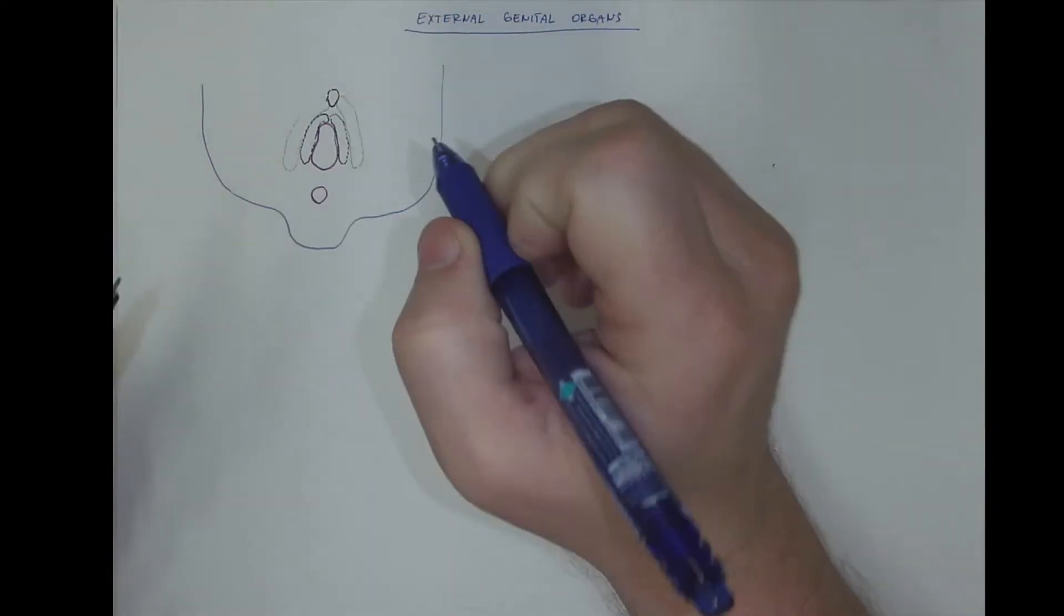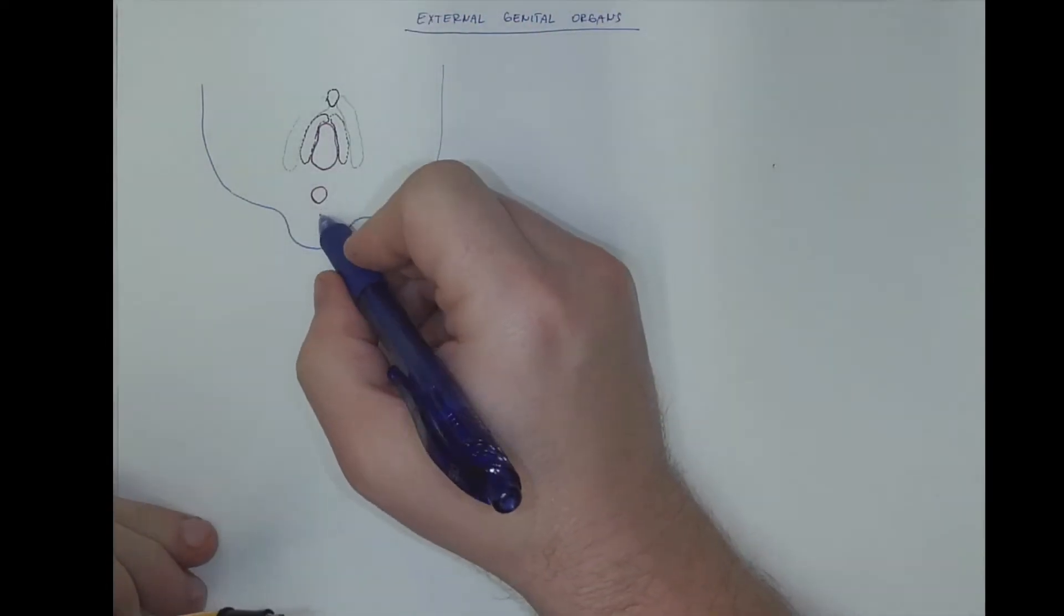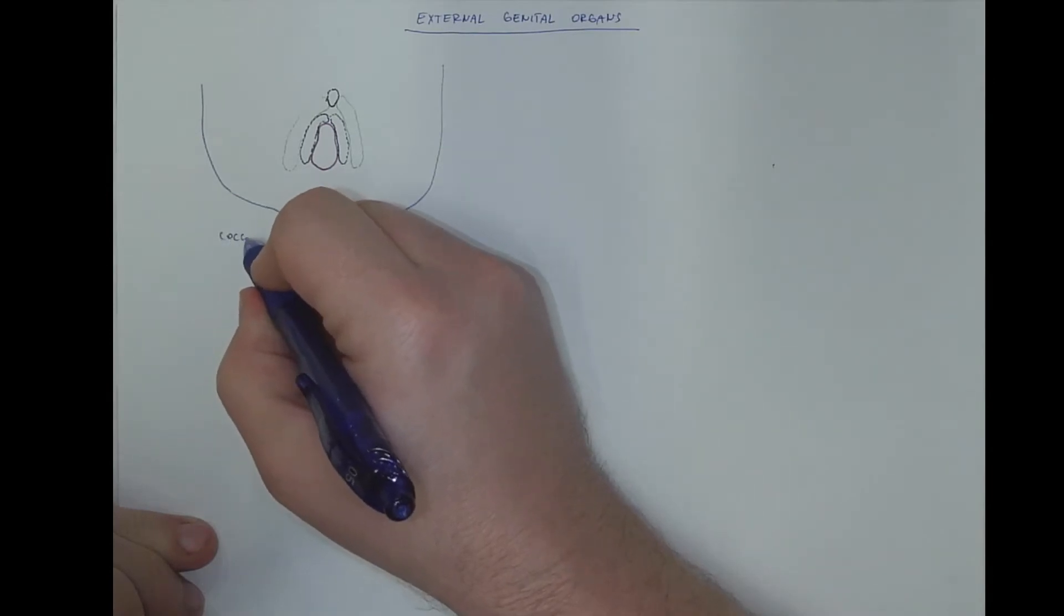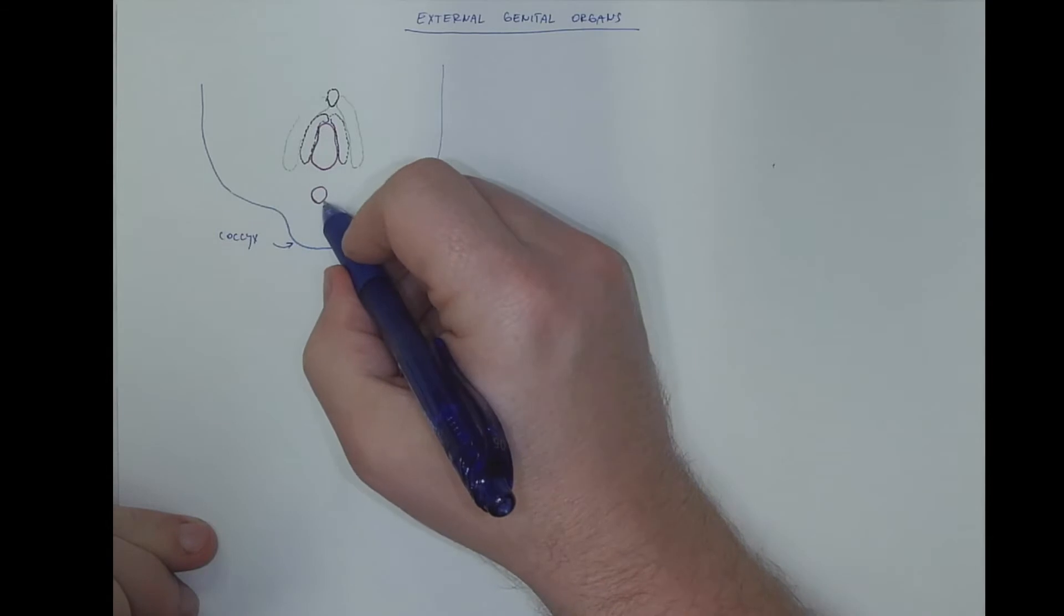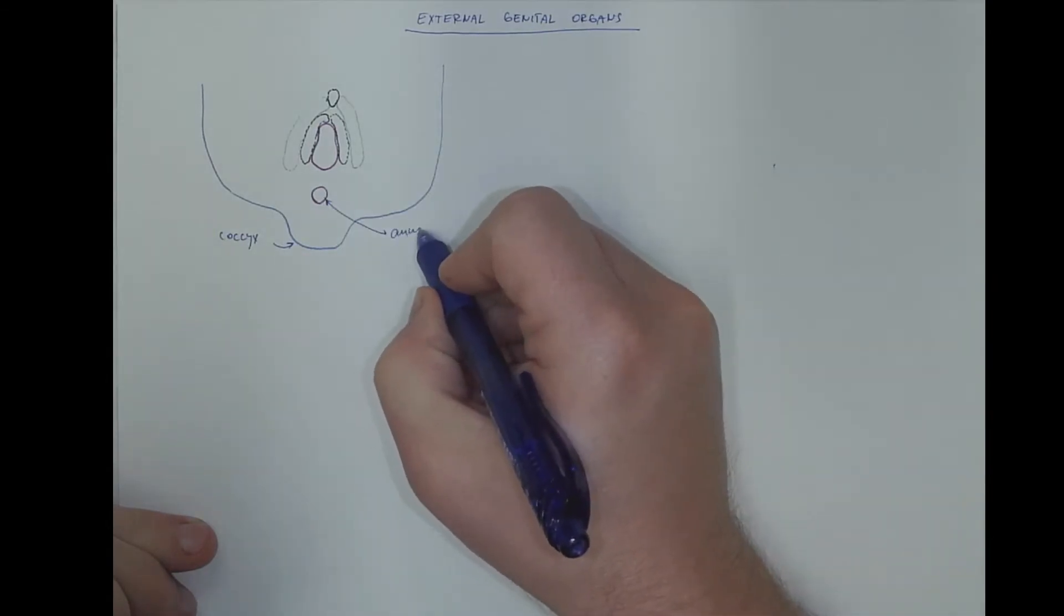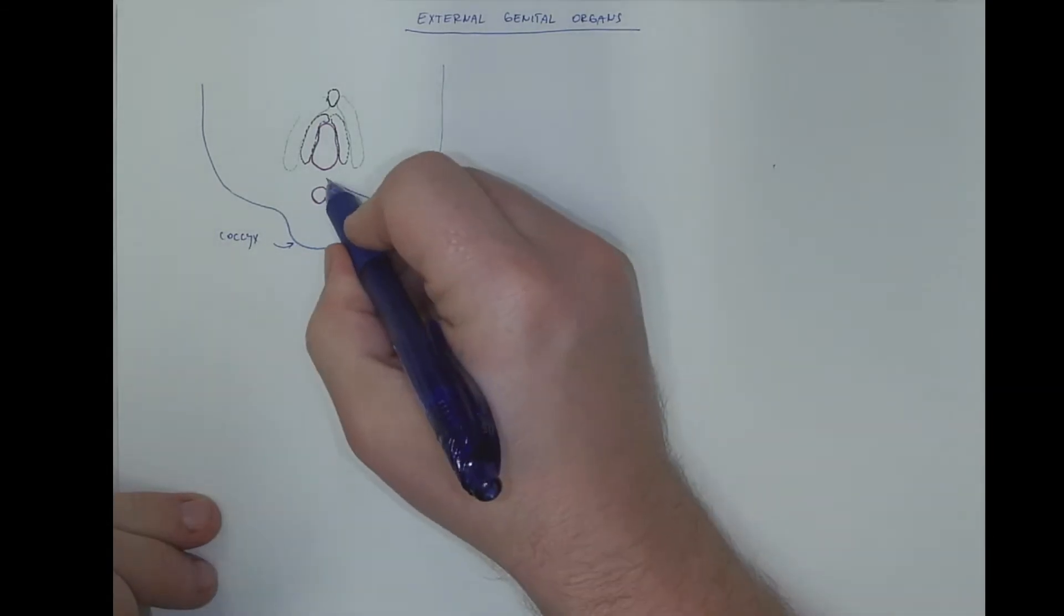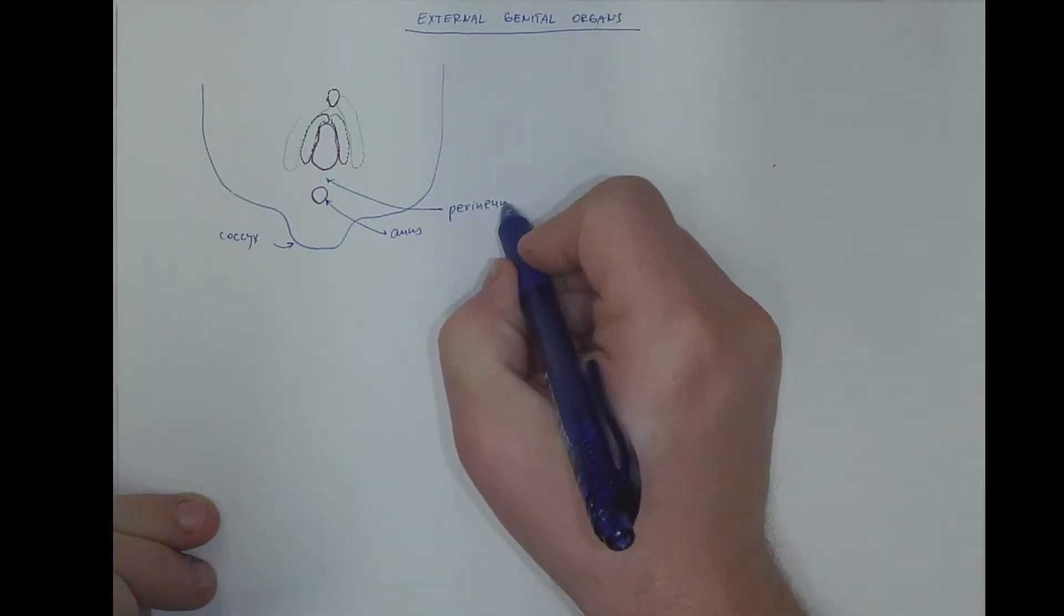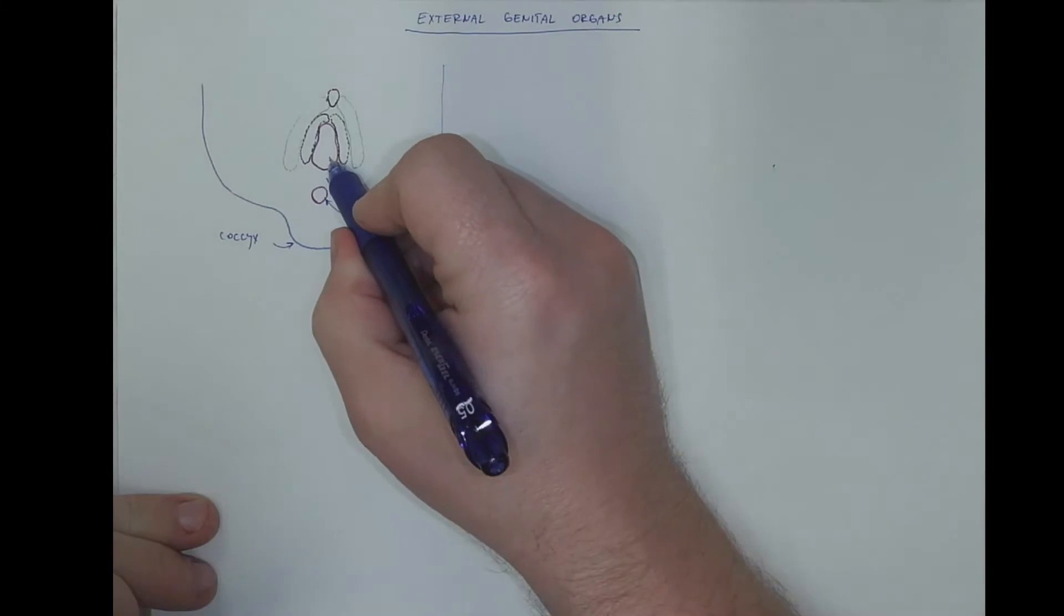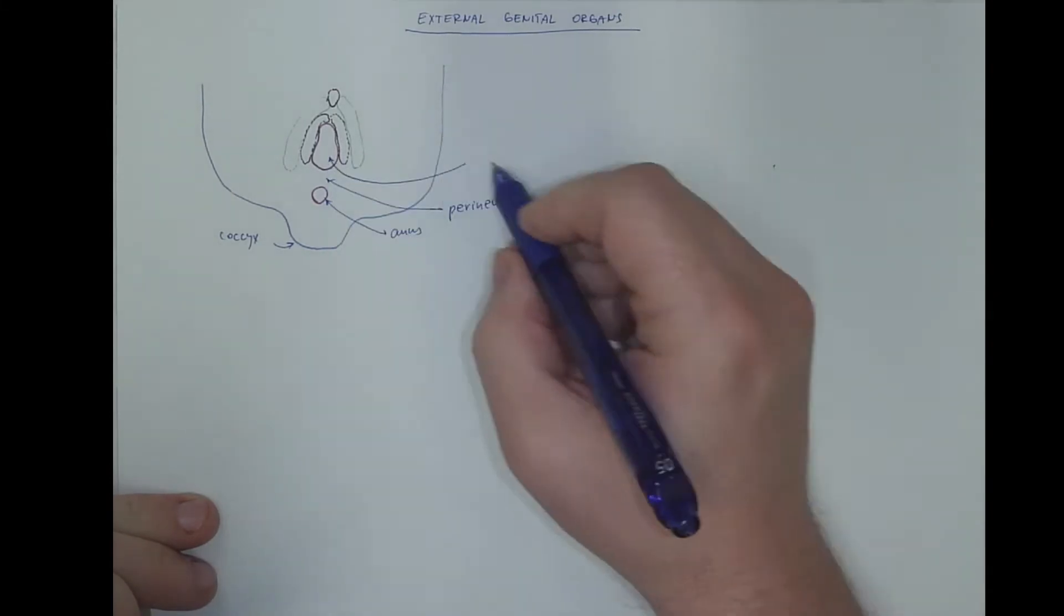So that's the indifferent stage. If this would be the coccyx, that would be the anus, the perineum, and the opening of the urogenital sinus.